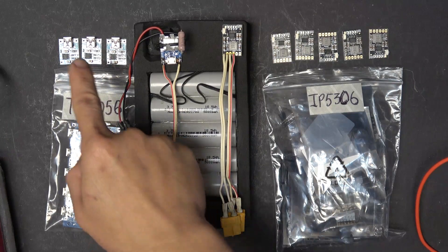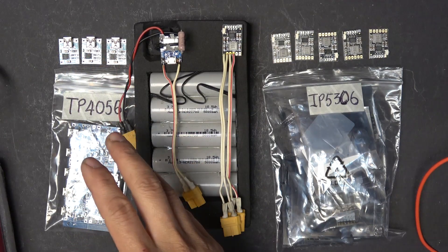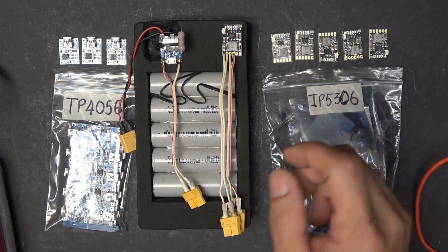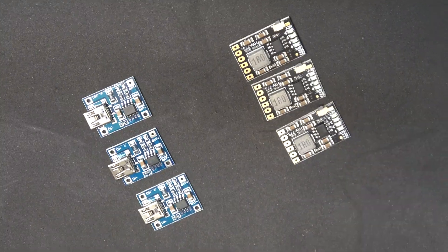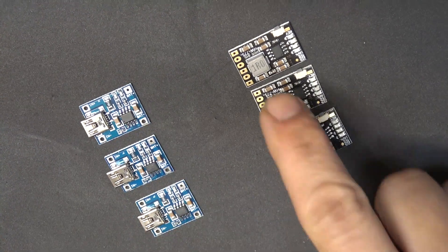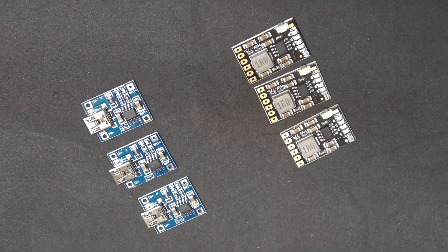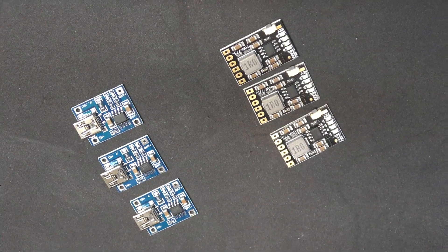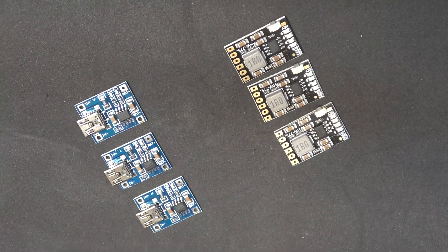A regular TP4056 board like these can only do 1 amp max, whereas the IP5306 boards like these can only do 2 amps max. The question is, is it possible to connect all of these together to increase their charging rate in order to charge my battery faster? That's what we're gonna find out in this video.